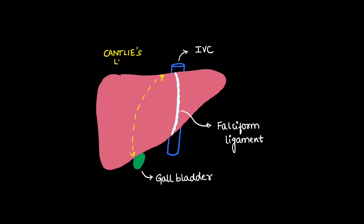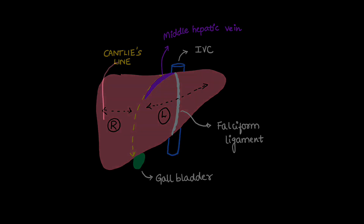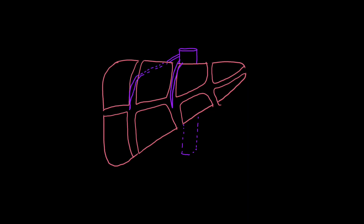In Couinaud classification, a line is drawn along the middle hepatic vein, which comes from the IVC, and this divides the liver into left and right lobes respectively. The IVC gives the right hepatic vein, middle hepatic vein, and left hepatic vein. According to the middle hepatic vein, right and left lobes of the liver are divided.